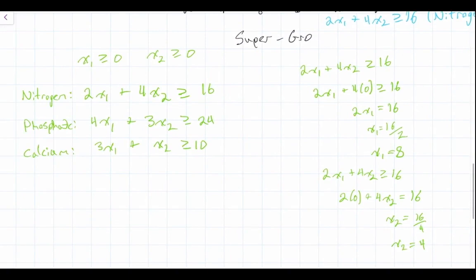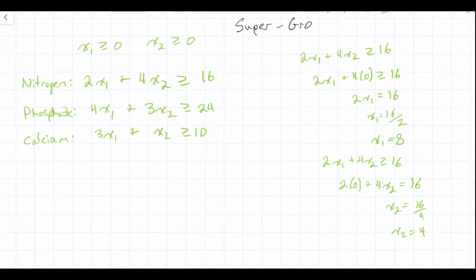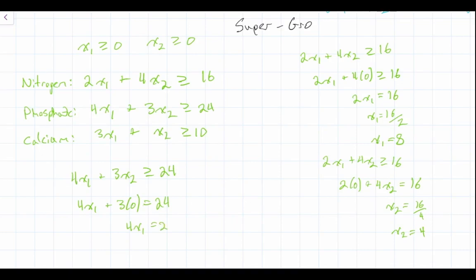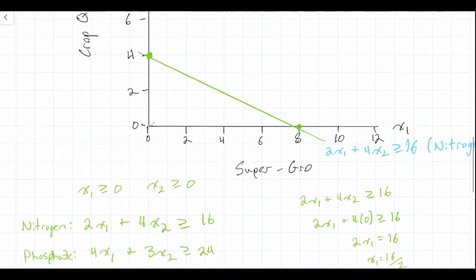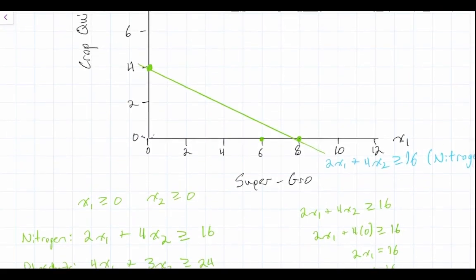Now let's solve for the x1 and x2 intercepts for the phosphate constraint: 4x1 plus 3x2 greater than or equal to 24. Setting x2 equal to 0: 4x1 plus 3 times 0 equals 24, so 4x1 equals 24, meaning x1 equals 24 divided by 4, giving us x1 equals 6. We go to the graph and plot x1 equals 6.